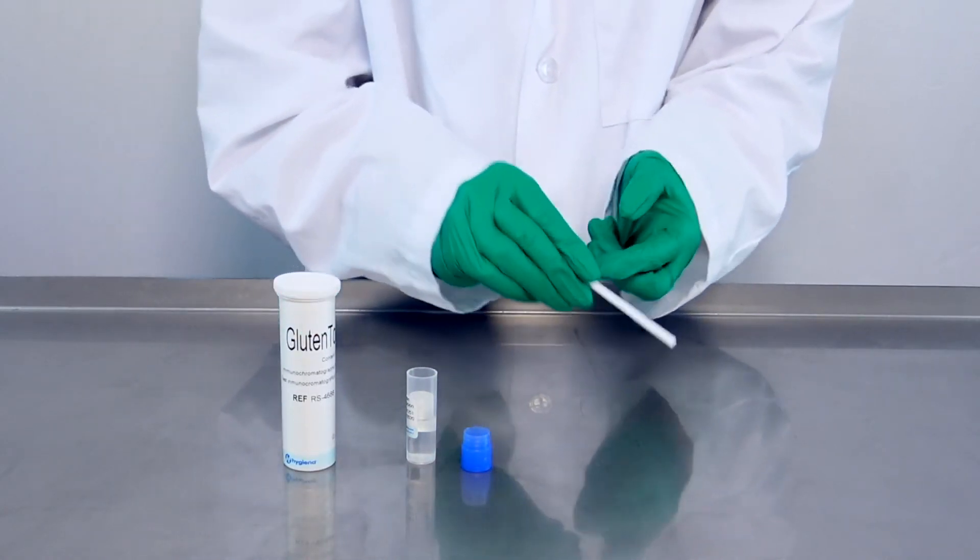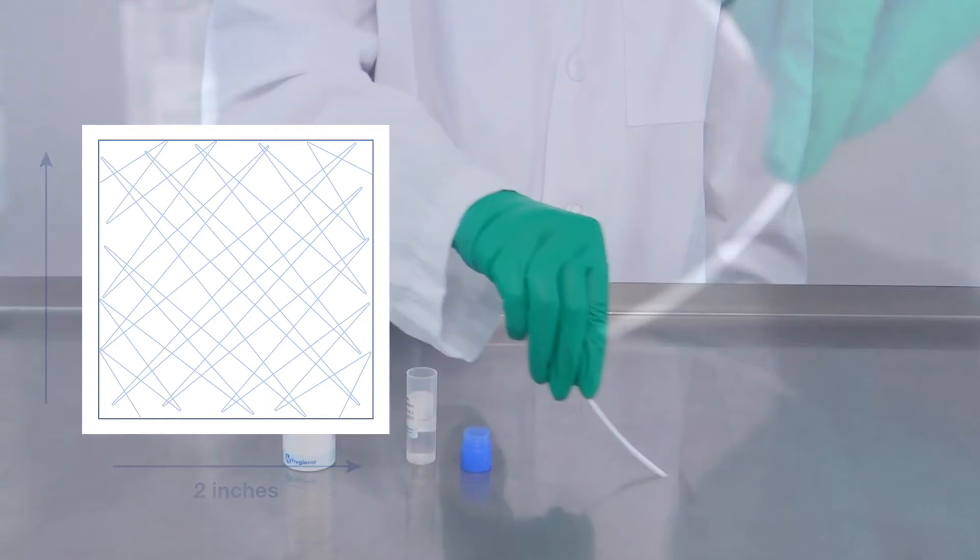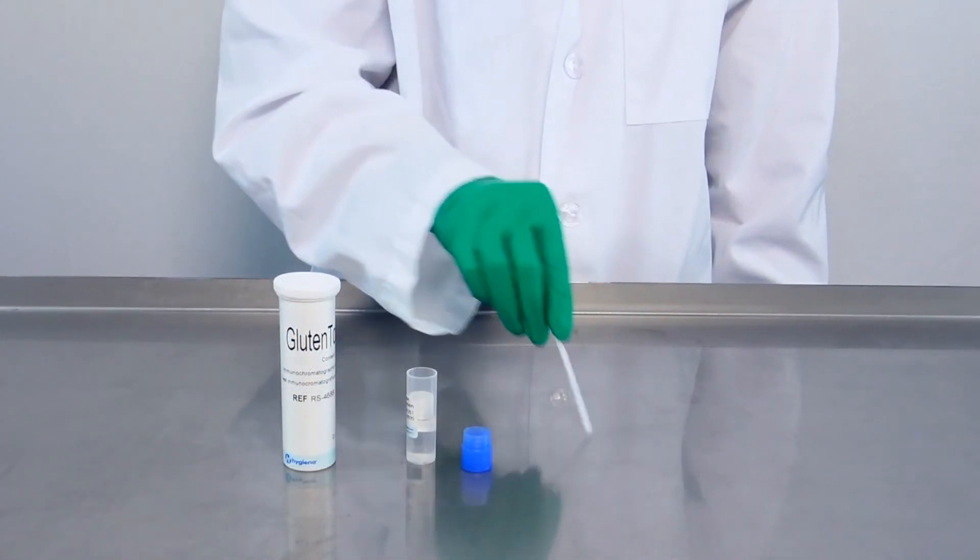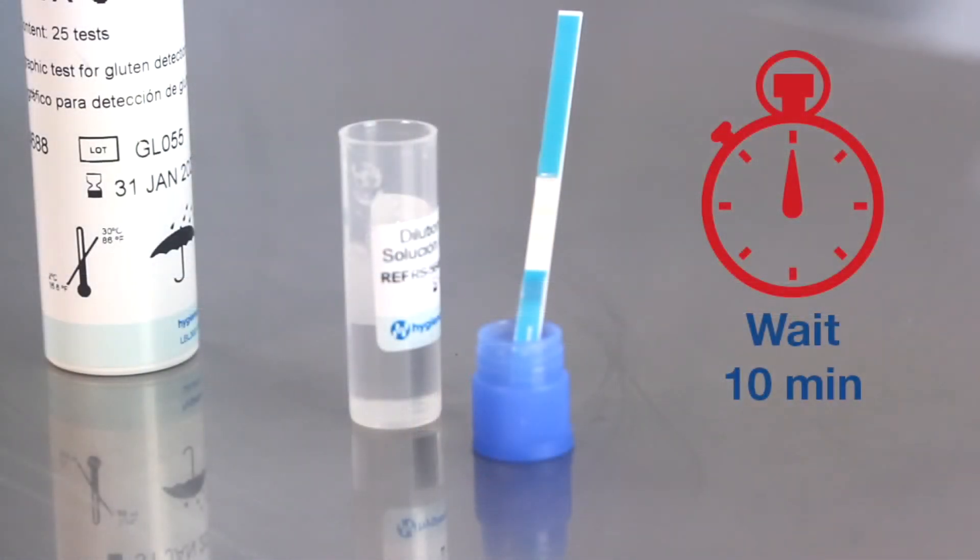Rub the cotton wool side of a gluten talk stick against a surface of at least two inches or in a line of 16 inches. Place the Gluten Talk stick upright into the blue cap containing the dilution liquid.